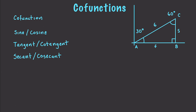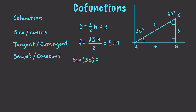I want to use an example from a previous tutorial as a review. If we have a 30-60-90 triangle with a hypotenuse of length 6, S is equal to one half of the hypotenuse, which equals 3. F is equal to the square root of 3 times H over 2, approximately 5.19. We know angles in a triangle add up to 180. The sine of 30 degrees equals one half, and the cosine of 60 degrees is also one half.